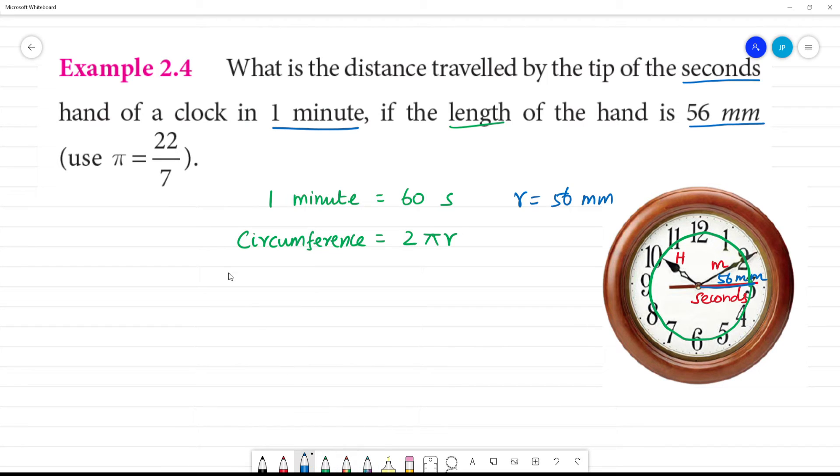Now we calculate the circumference. π is 22 by 7. So this length is 56 millimeter. That is equal to, cancel, so this length is 44, 44 multiplied by 8 millimeter. So this length is 352 millimeter. This length is 352 millimeter.